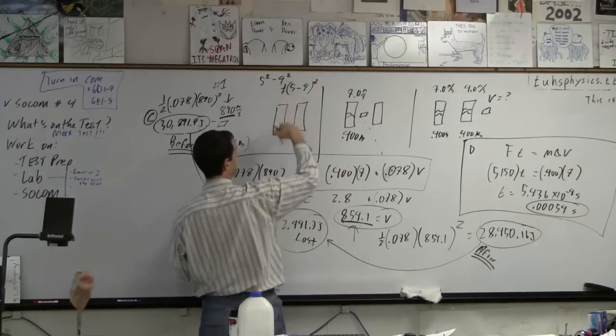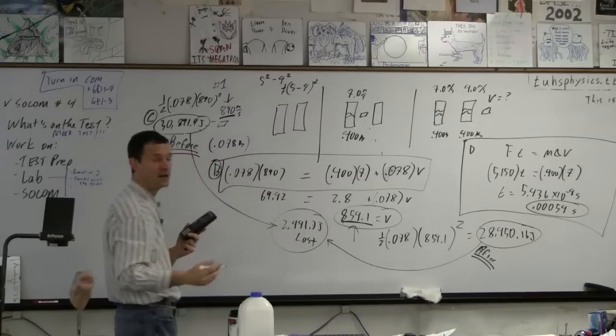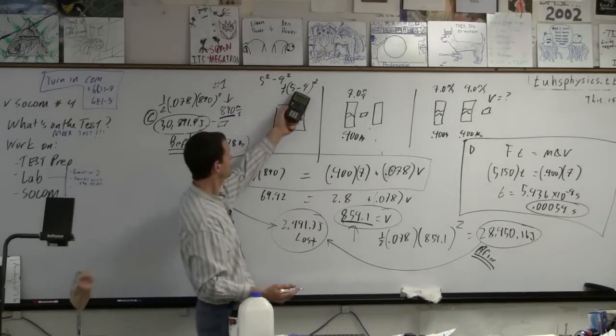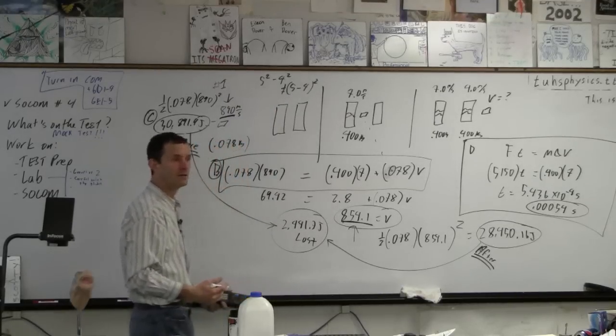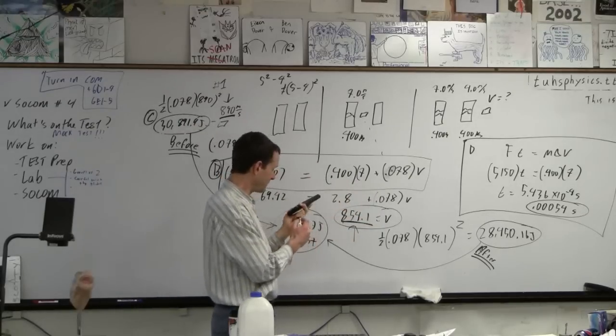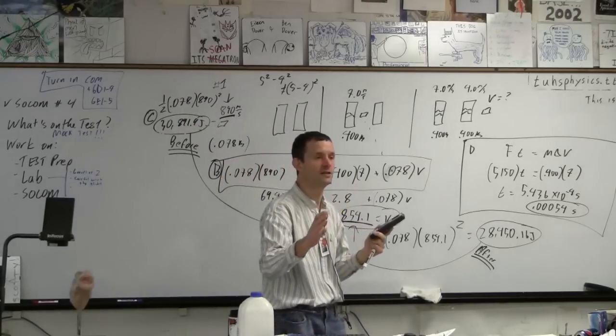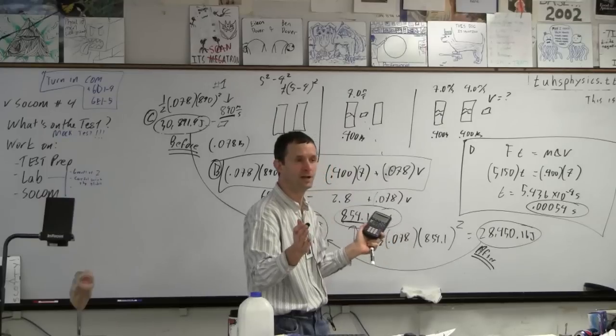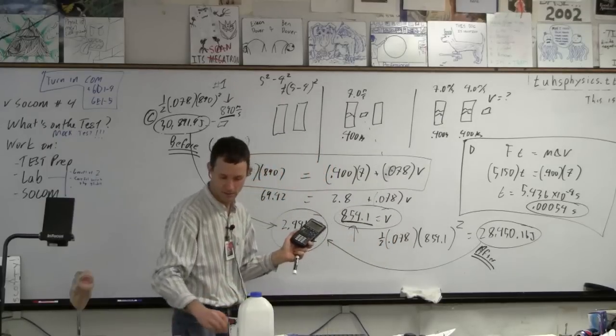Because this is 25 minus 16, that's 9, right? This is 1, right? So don't do that. Do the kinetic energy and the kinetic energy and then subtract them. I mean, just, I'm just saying, you know, if the test asks that question, right? All right. Thank you.